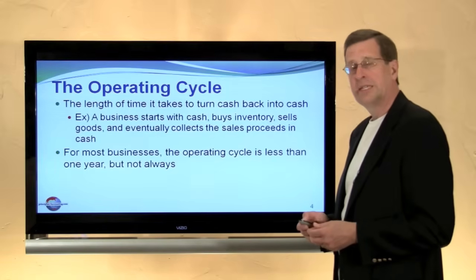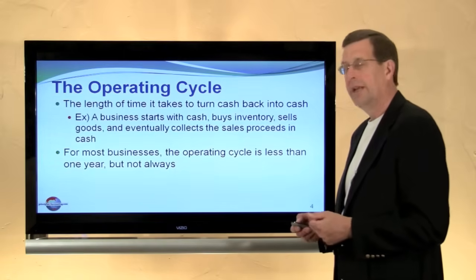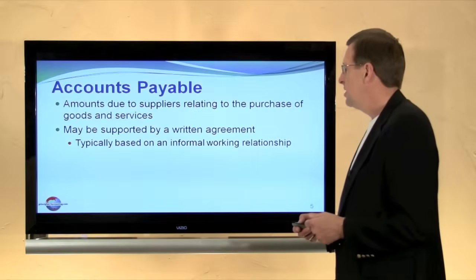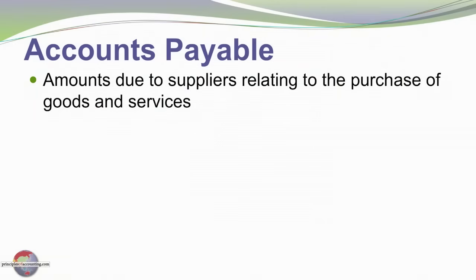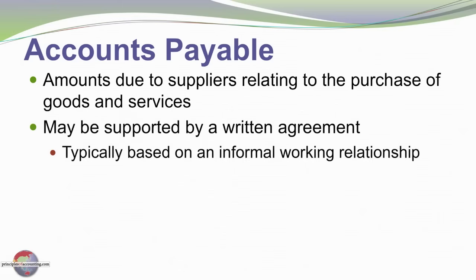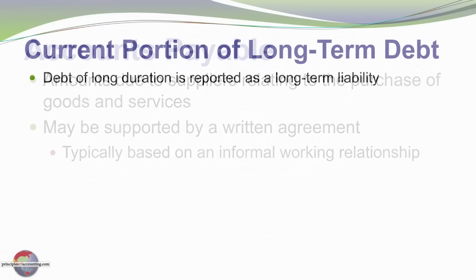For most businesses, the operating cycle is less than one year, but that's not always the case. An example of a current liability would be accounts payable — these are amounts due to suppliers relating to the purchases of goods and services. They may be supported by a written agreement, but typically it's based on an informal working relationship. Accounts payable are fairly obviously included in the current liability section.